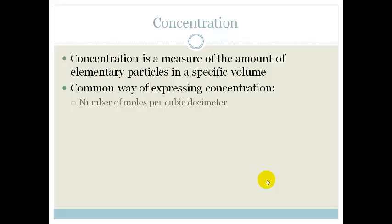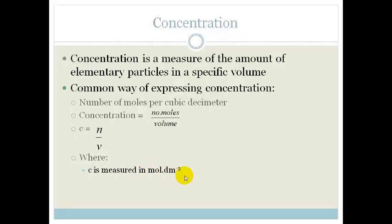Number of moles per cubic decimeter. So concentration is number of moles divided by volume, which can be written as C equals n over V. Where your C is your concentration and it's measured in moles per decimeter cubed. Please note that that's your SI unit, moles per decimeter cubed. N is the number of moles and V is the volume, measured in decimeters cubed.